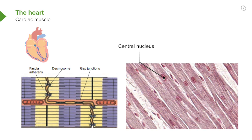Firstly, it's got a central nucleus, similar to smooth muscle. But skeletal muscle, you may recall, has got many, many peripheral nuclei. Cardiac muscle has also got striations, just like skeletal muscle, but unlike smooth muscle, which doesn't have striations.